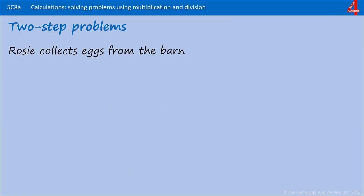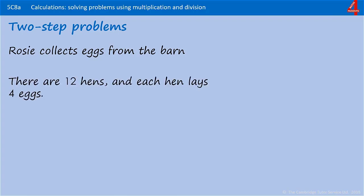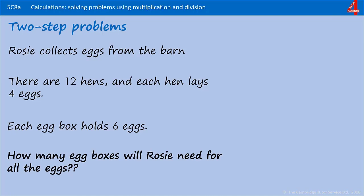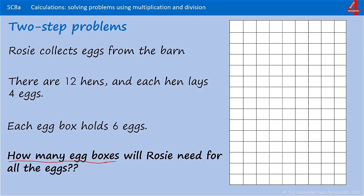Here's one last one for you to try. Rosie collects eggs from the barn. There are 12 hens and each hen lays 4 eggs. Each egg box holds 6 eggs. How many egg boxes will Rosie need for all the eggs? Remember to use the Rucksack acronym. Pause the video and have a go.